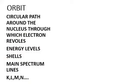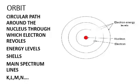Orbit. Orbit is the first address for electrons. The circular path around the nucleus where the electron revolves is called an orbit. Bohr named them energy levels or shells. The concept of energy levels and shells comes from the spectrum.